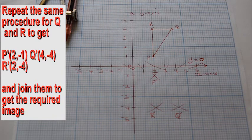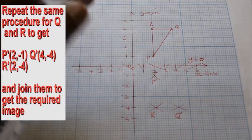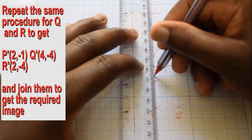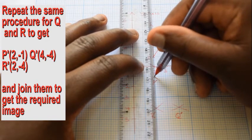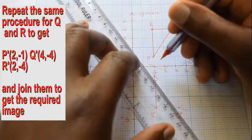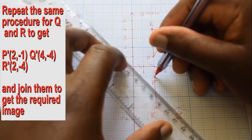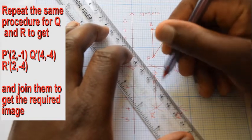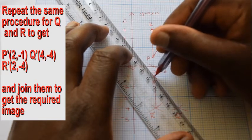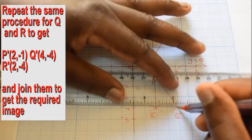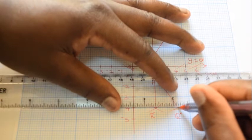Join the points to form the image shape. Read off the image coordinates: P' is 2, negative 1; Q' is 4, negative 4; and R' is 2, negative 4.